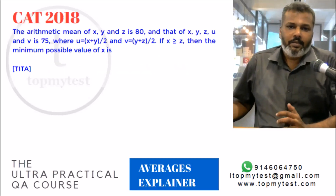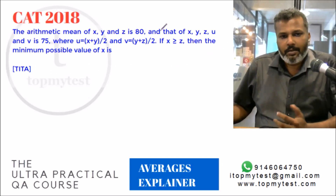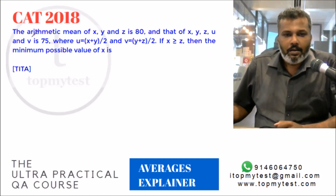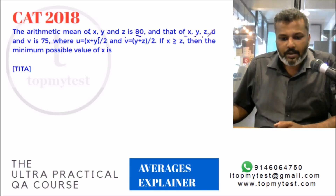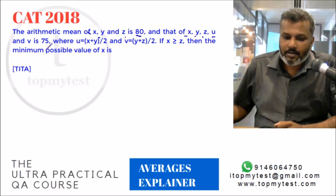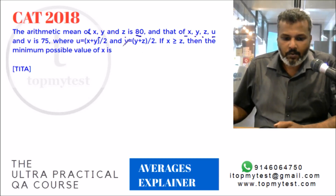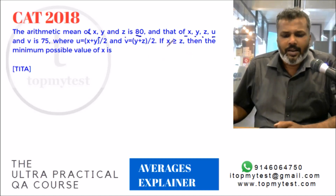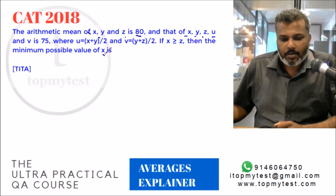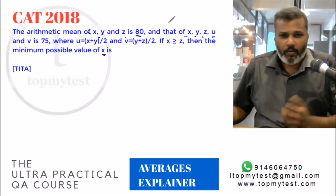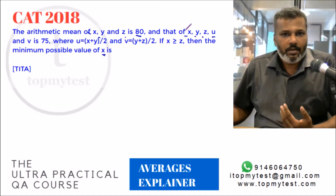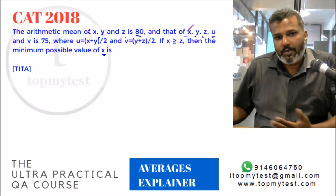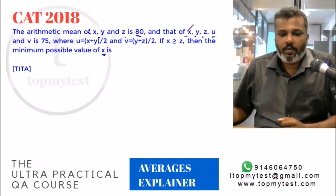Let's start with something pretty straightforward — this came up in last year's CAT. The arithmetic mean of x, y, z is 80, and that of x, y, z, u, and v is 75, where u equals (x + y)/2 and v equals (y + z)/2. Given x ≥ z, what is the minimum possible value of x? We know sum equals average times number of observations, so x + y + z = 240.